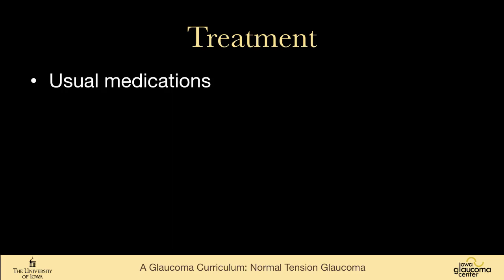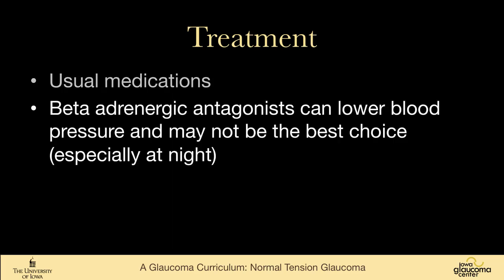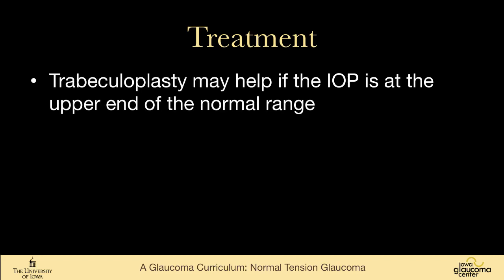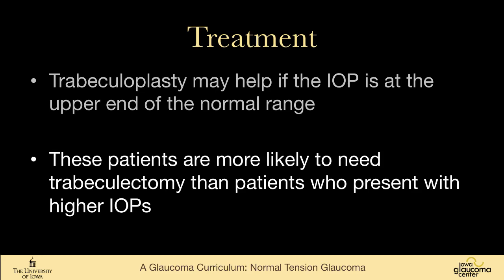We use the usual medications, and tend to avoid beta blockers because they can lower blood pressure and are not very good at lowering intraocular pressure at night. The LoGIT study showed an advantage of brimonidine over timolol. I think most people would start with the prostaglandin analog because it is the most effective at lowering intraocular pressure. I do precious little trabeculoplasty for people with normal tension glaucoma, but there is evidence that if people are at the upper range — pressures of 19 and 20 — it may help some. These patients in general are more likely to go on to trabeculectomy than patients who present with higher intraocular pressures.